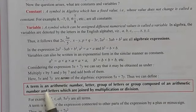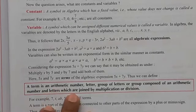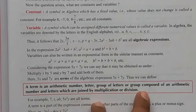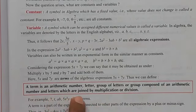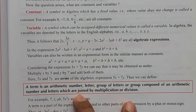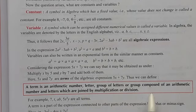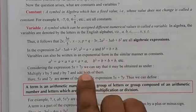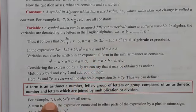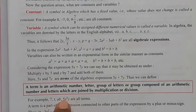A term is an arithmetic number, a letter, a group of letters, or a group composed of an arithmetic number and letters which are joined by multiplication or division. For example, T is also a term, AB is also a term, 5X squared Y uses many variables and one number — this is also a term.